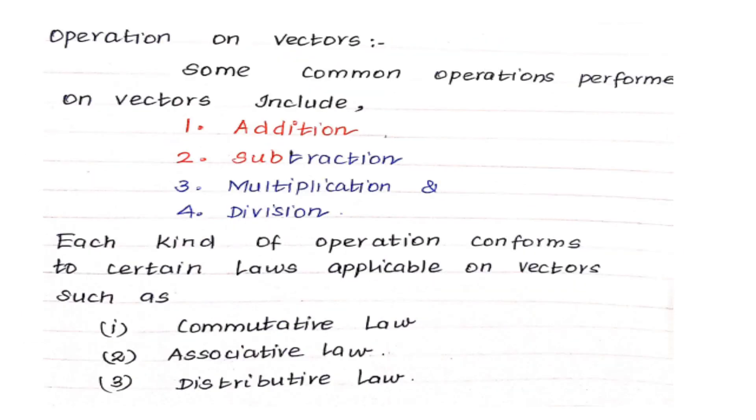And next, operation on vectors. Some common operation performs on the vector, performed on the vector. Include, what are the operation addition, subtraction, multiplication and division. Each kind of operation conforms to certain laws applicable on vectors. This law should be applicable. Commutative law, associative law and distributive law.